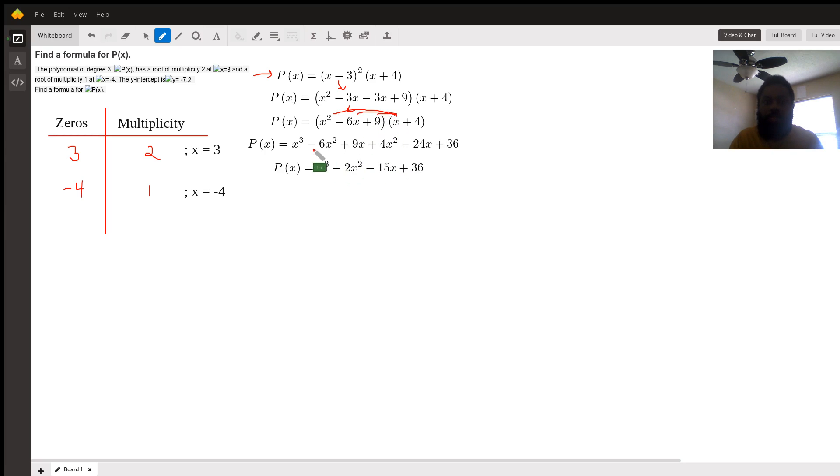Then we do 4 times each term: 4x squared minus 24x plus 36.